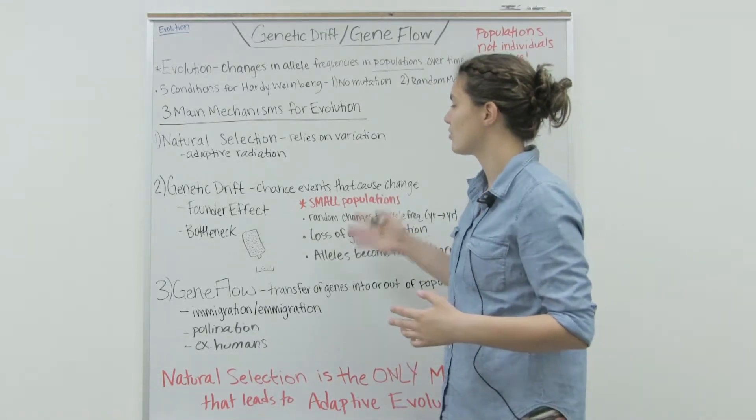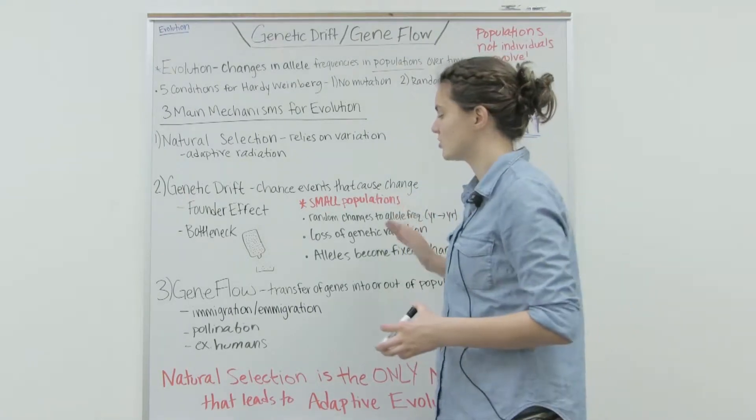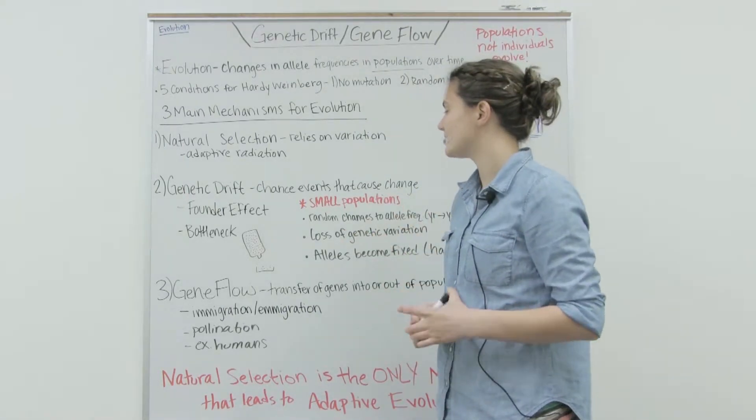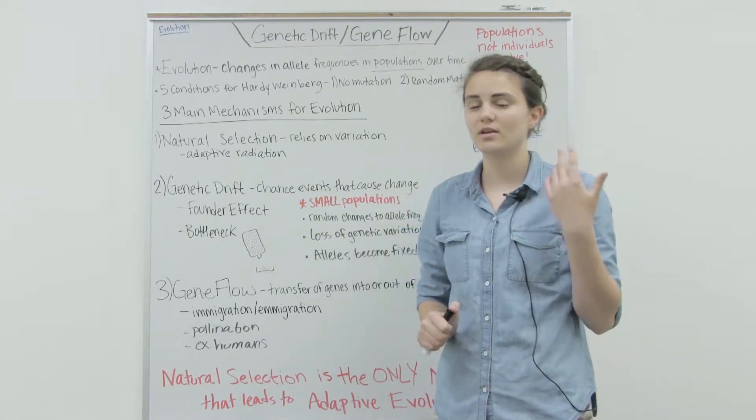The main thing that we're focusing on today are the two other mechanisms for evolution: genetic drift and gene flow. Genetic drift is defined as chance events that cause change, based on probability.